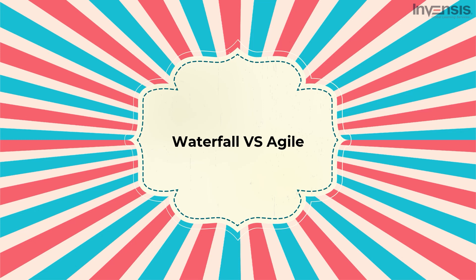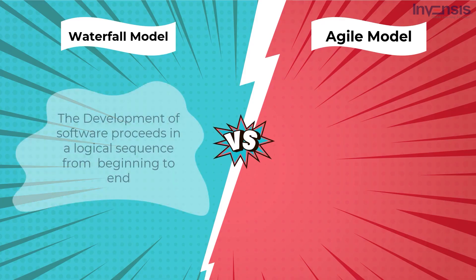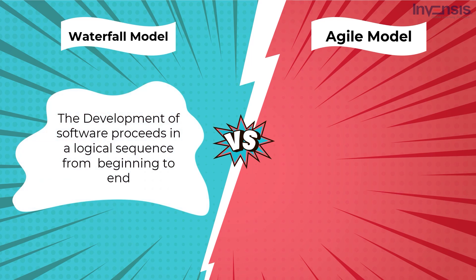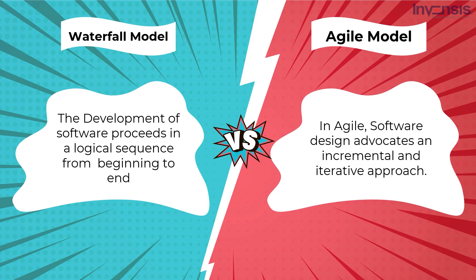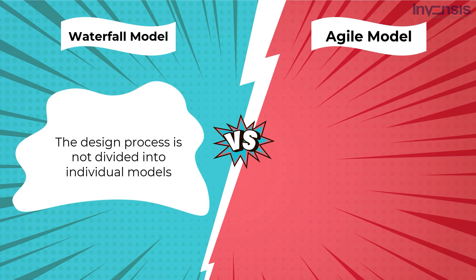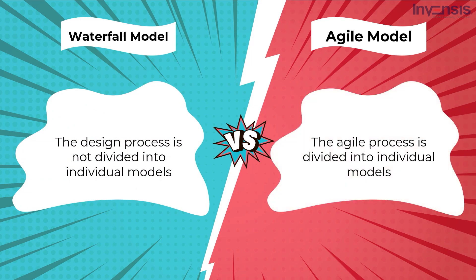Now let us start with the difference between Waterfall and Agile. The Agile and Waterfall models are two distinct approaches to the software development process. Both methods can be useful depending on the necessity and form of the project. In the Waterfall model, development proceeds in a logical sequence from beginning to end. The Agile method advocates an incremental and iterative approach, and the process is divided into individual models on which designers work.